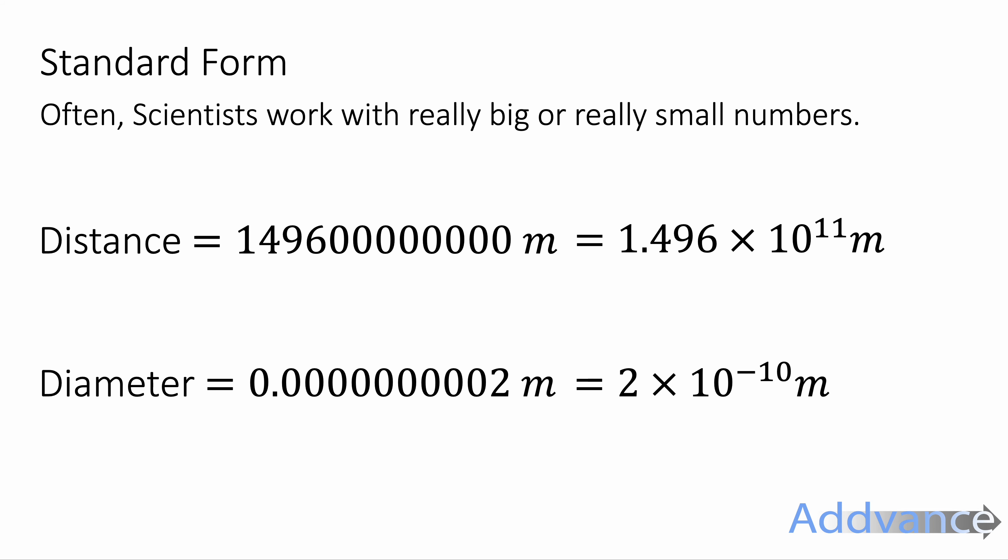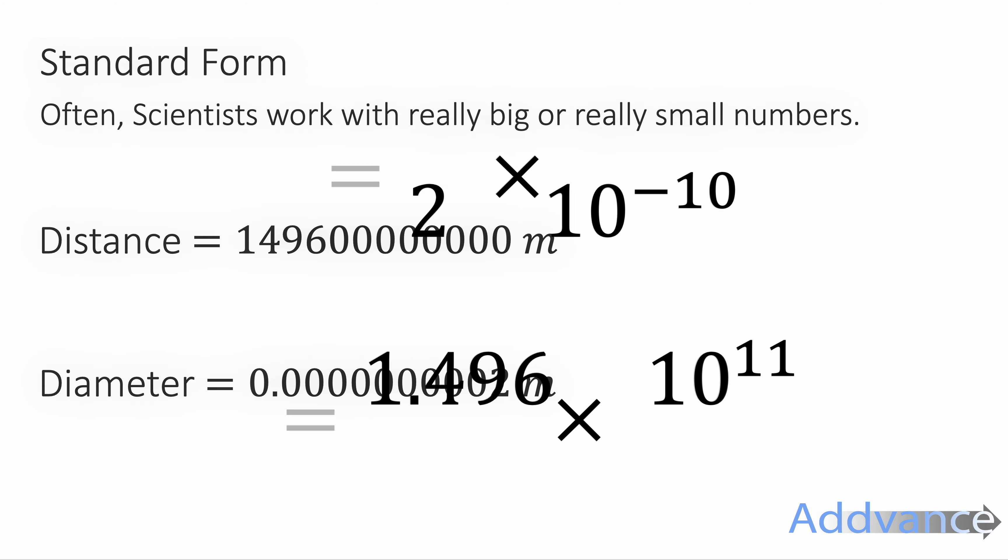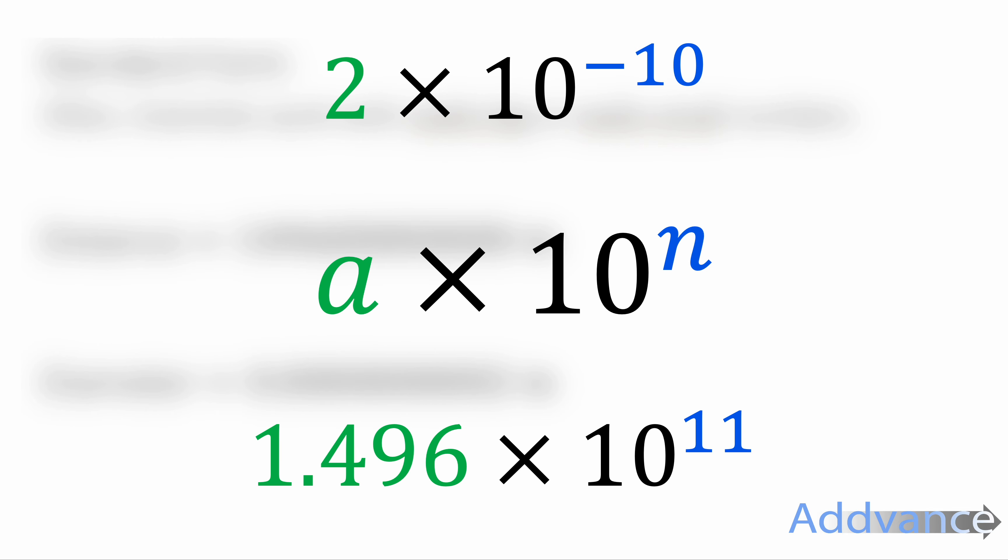Now those are really crazy numbers and it would be nice if you could write them in a shorter way. So we could write the distance from the Earth to the Sun as 1.496 times 10 to the power of 11, or the diameter of an atom is 2 times 10 to the minus 10 meters. And that is standard form.